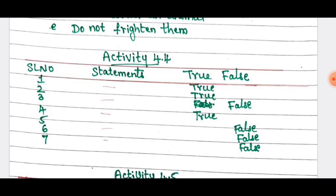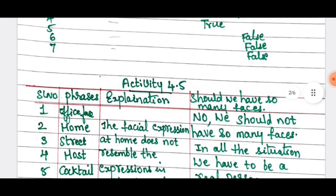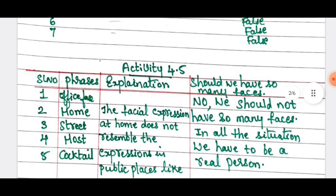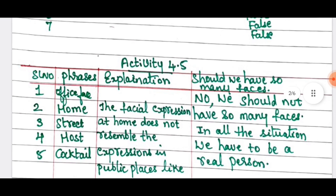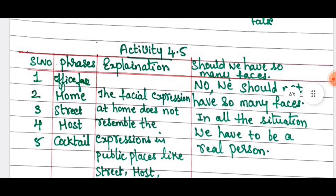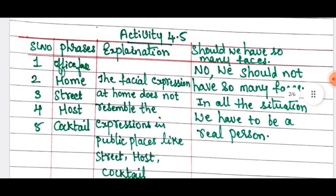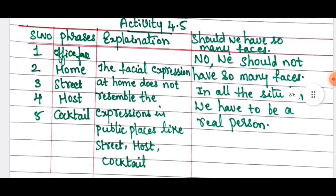Next, activity 4.5. Read the fourth and fifth stanza. Different phrases in the poem — give explanation. The phrases given are: office face, home face, street, host and cocktail. The explanation: the facial expression at home does not resemble the expressions in public places like street, host and cocktail. Serial numbers 2, 3, 4, 5 — complete explanation is the answer.